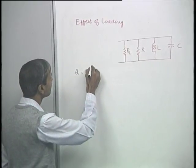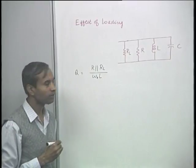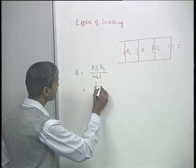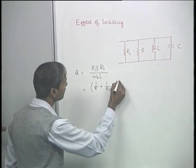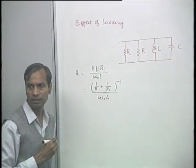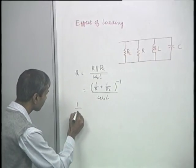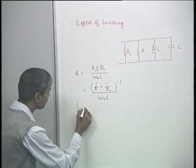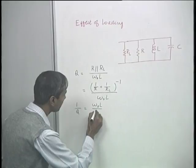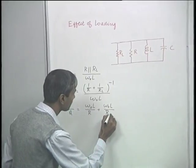The quality factor will be the parallel combination of R and R_L divided by omega-naught times L, which we may write as the inverse of (1/R + 1/R_L), divided by omega-naught times L. This can be rewritten as: 1/Q equals omega-naught L divided by R, plus omega-naught L divided by R_L.